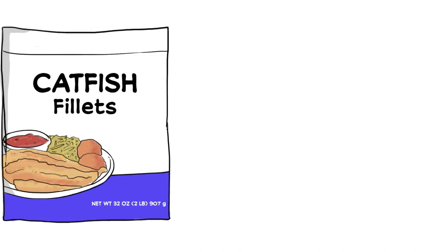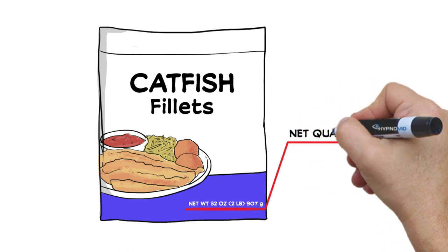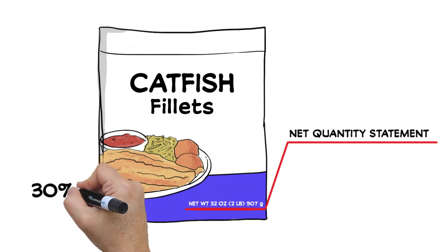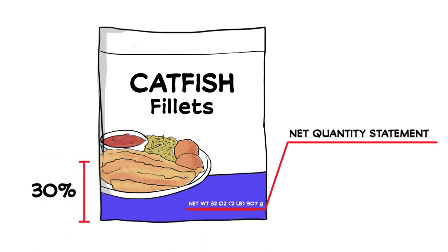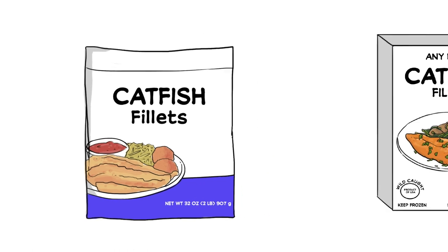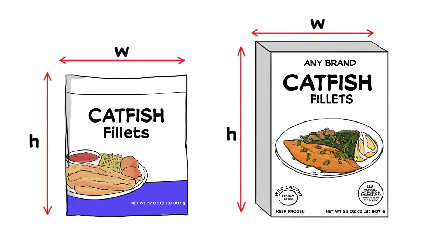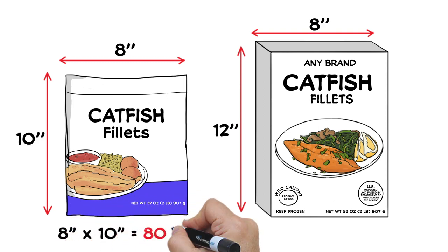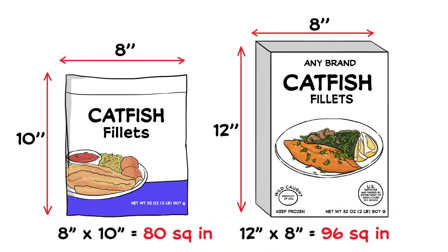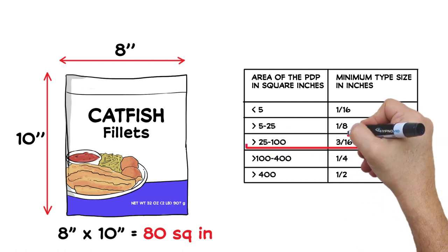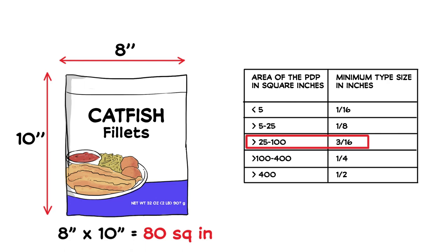The USDA has very specific rules about how the net quantity of contents is placed on the label. It must be a distinct line item in the bottom 30% of the label, well separated from other information around it, and there is a minimum type size based on the total area of the PDP. To calculate the minimum type size, first measure the entire area of the PDP, then use the USDA's chart to figure out the minimum type size for net contents. For example, if your bag is 8 inches by 10 inches, for a total area of 80 square inches, the height of your type has to be at least 3 sixteenths of an inch.